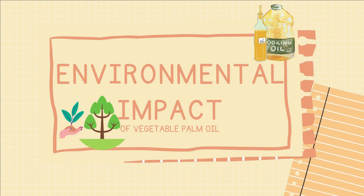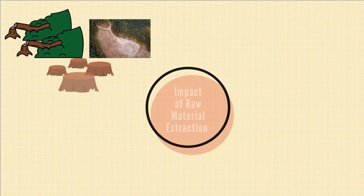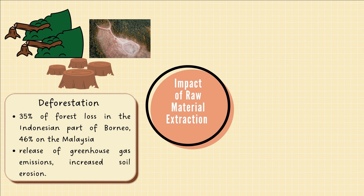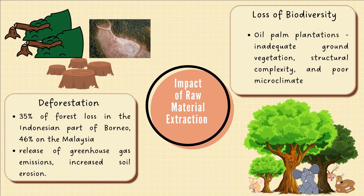The third part of this video is the product's impact on the environment. Deforestation happens when land needs to be cleared for palm oil plantations. Palm oil was responsible for 35% of forest loss in the Indonesian part of Borneo and 46% on the Malaysian side, with dwindling expanses of tropical rainforest. Deforestation causes release of greenhouse gas emissions, forest fires, disrupted water cycles, and increased soil erosion. Loss of biodiversity is also a result, as the world faces an unprecedented rate of species extinctions. In oil palm plantations, inadequate ground vegetation, structural complexity, and poor microclimate are proven to reduce species richness.